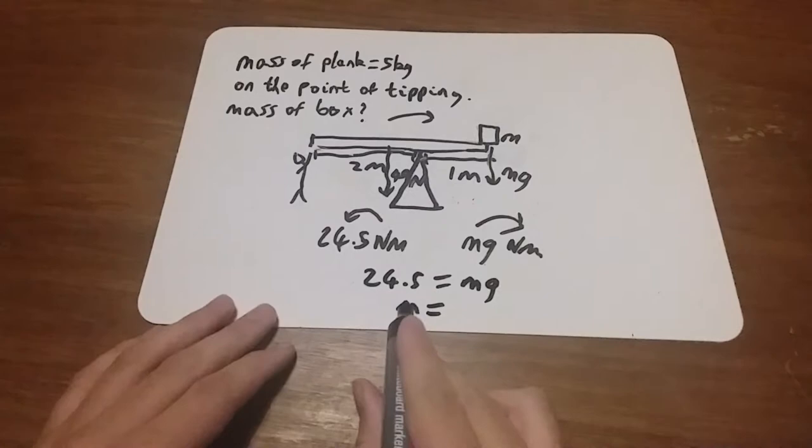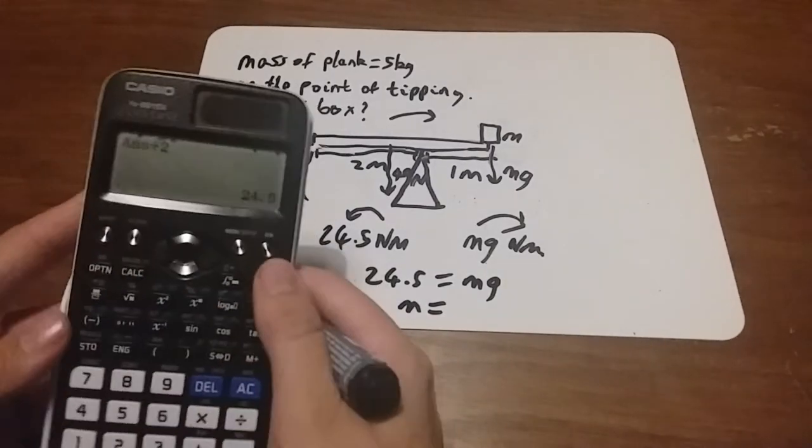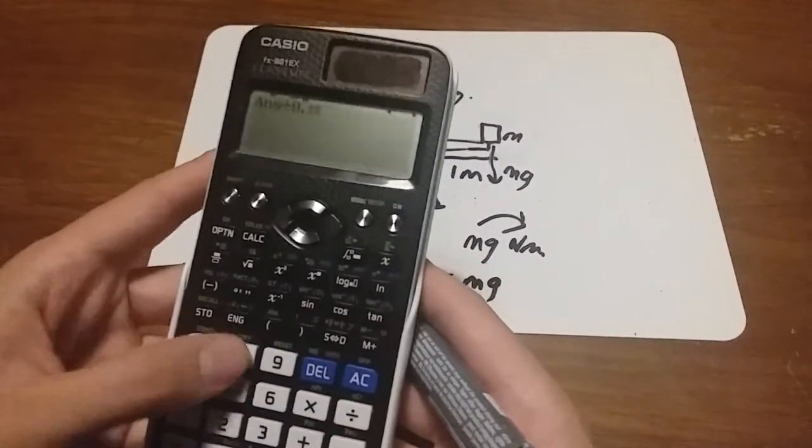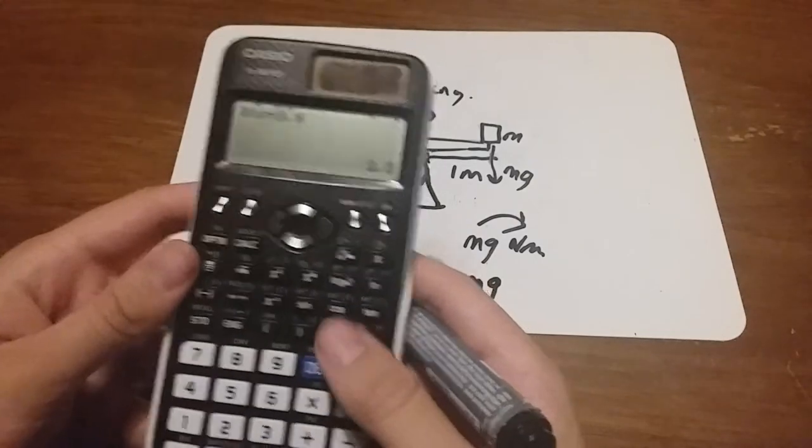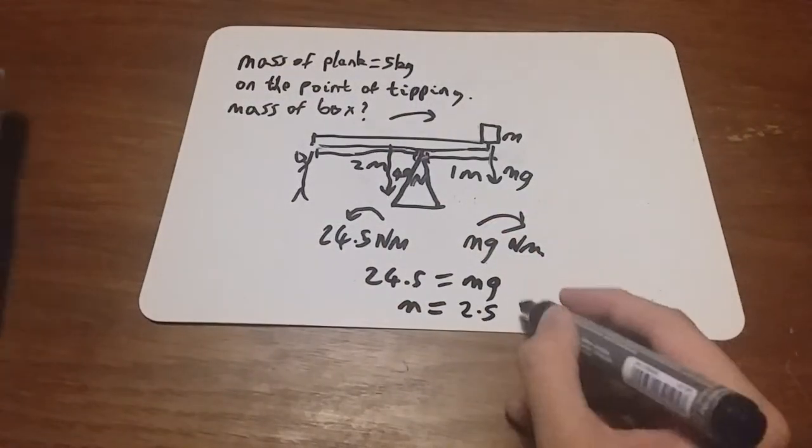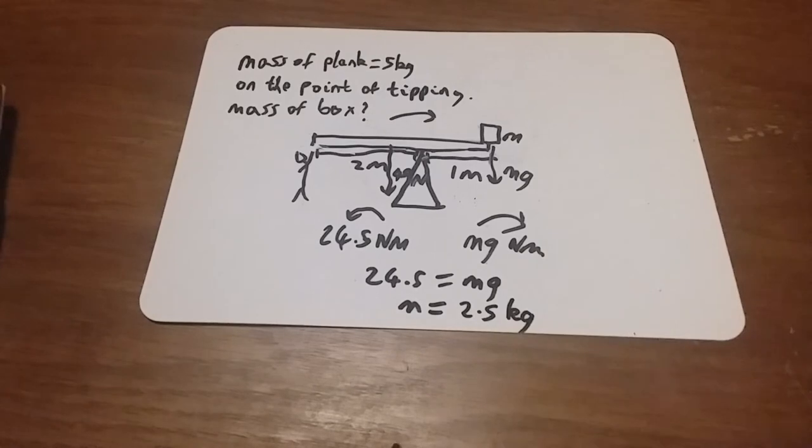And m equals 24.5 divided by g. So divided by 9.8, I get 2.5. That's the mass in kilograms of that box.